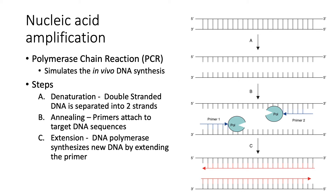Next, let's proceed to nucleic acid amplification. The most common technique used to amplify nucleic acid is the polymerase chain reaction, or PCR. This is an in vitro technique that simulates in vivo DNA synthesis, and using this technique we can detect very small amounts of DNA from bacteria by amplifying them, making them easier to detect. There are three steps in PCR: denaturation, in which double-stranded DNA is separated into two strands; annealing, in which primers attach to target DNA sequences — and this attachment is an example of hybridization.